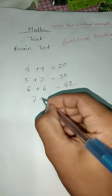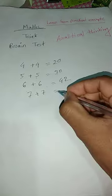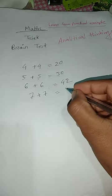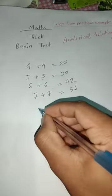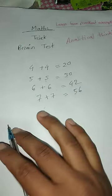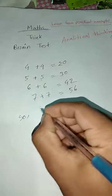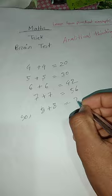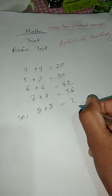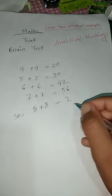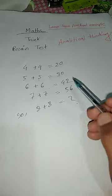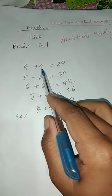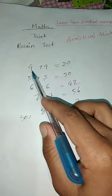If 7 plus 7 equals 56, so what do you think 8 plus 8 equals? Let's start. We're going to try to solve this problem. Notice that 4 plus 4 equals 20 is actually 4 times 5 equals 20.